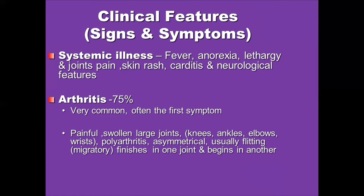Arthralgia occurs in 75% of patients and is the most common sign as well as the first symptom of the disease. It is characterized by painful, swollen large joints — basically knees, ankles, elbows, and wrists — and usually presents as an asymmetrical polyarthritis of the flitting migratory type, moving from one joint to another. This is a typical pattern of arthritis in acute rheumatic fever.